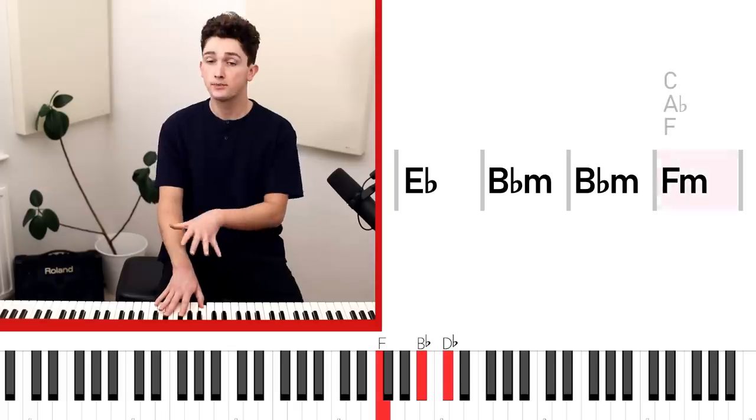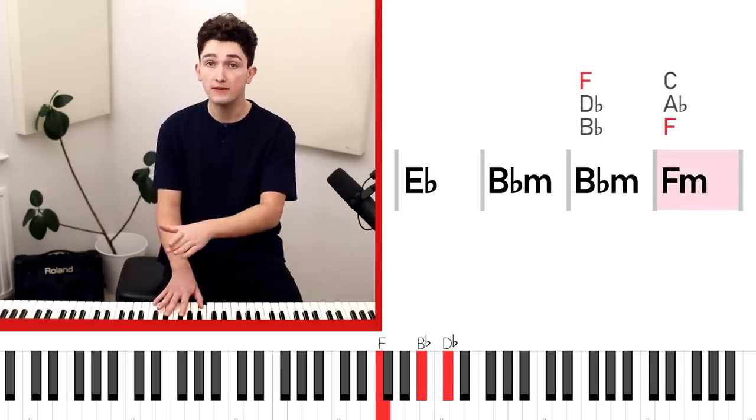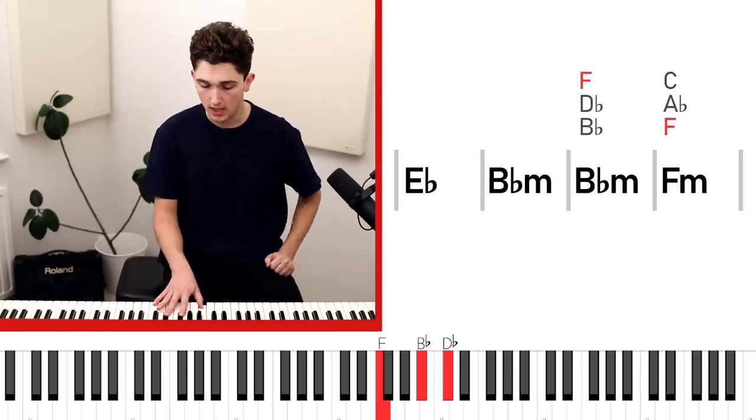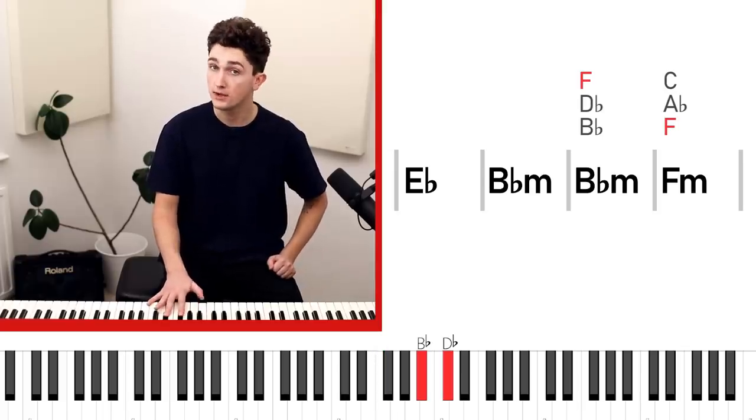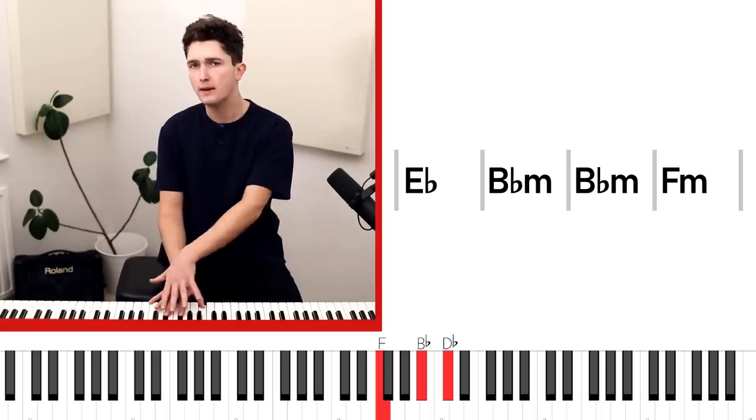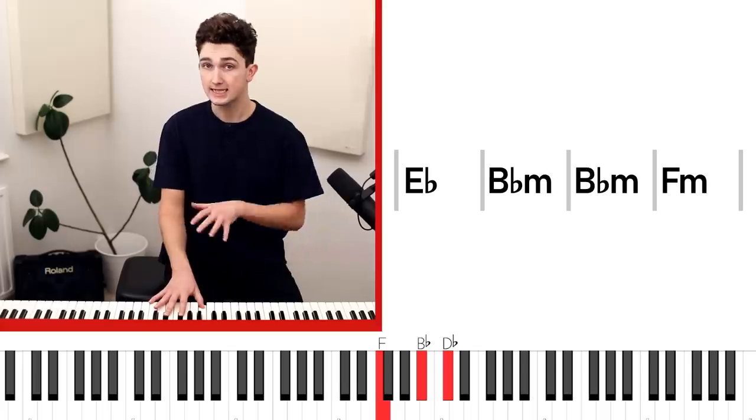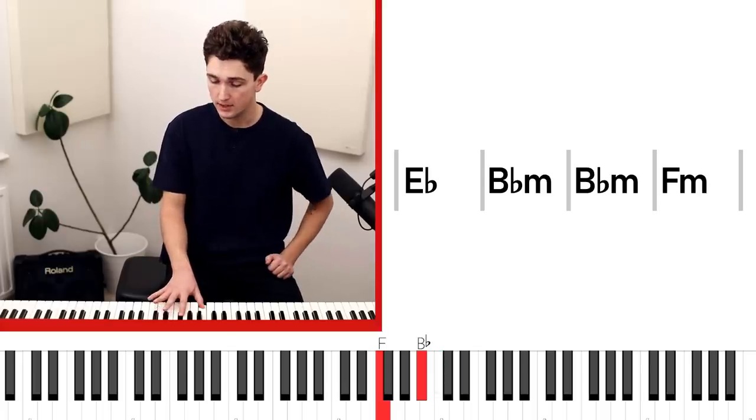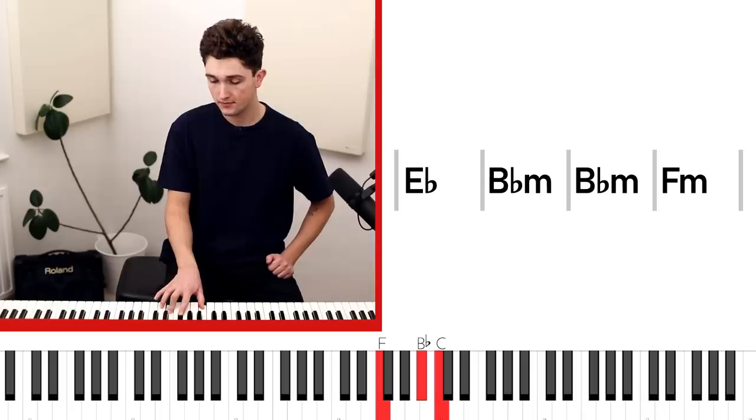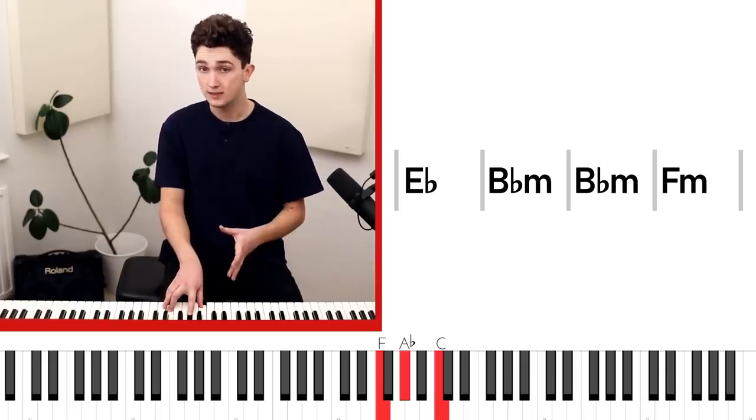Now with the last chord in the progression, the F minor, we can apply the same rule. There's one note in common again between B-flat minor and F minor, our last chord, and that is the note F. So we're going to keep the F where it is and we're going to think about moving the other two notes. So for F minor, we need a C and an A-flat as well. So this note can move down to C and this note can move to A-flat and we wind up with the chord we need.